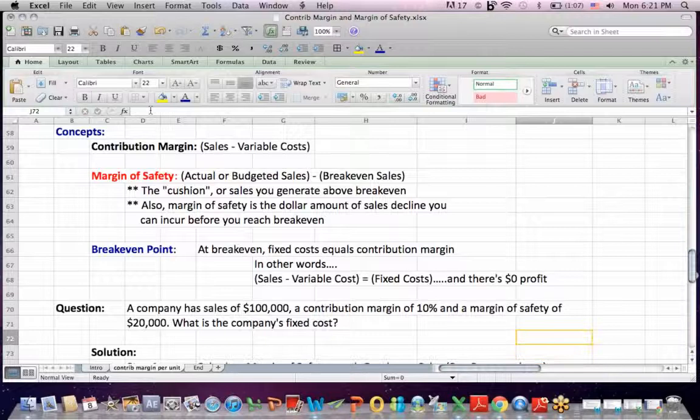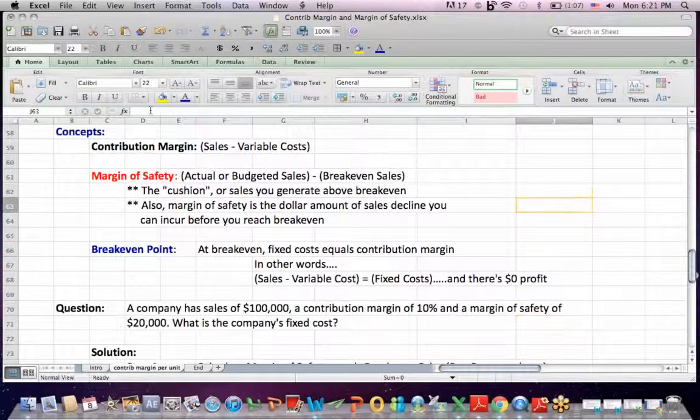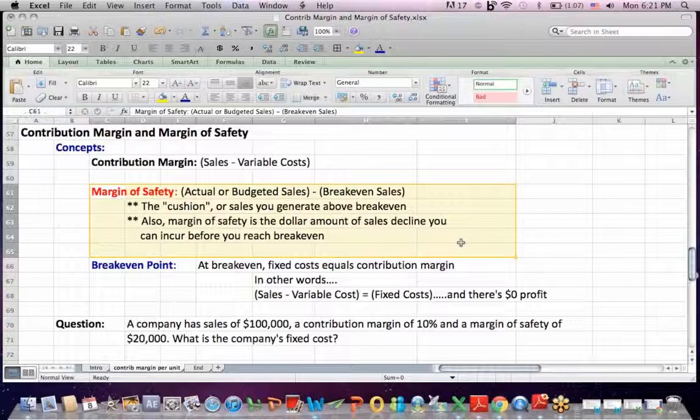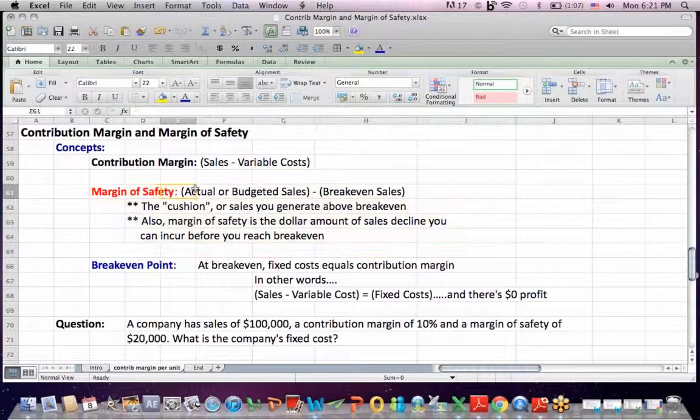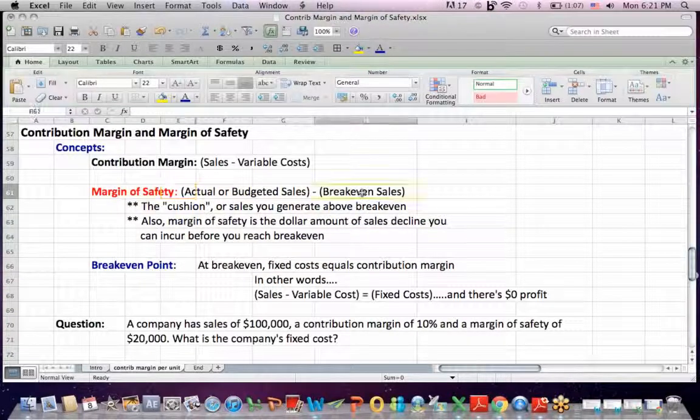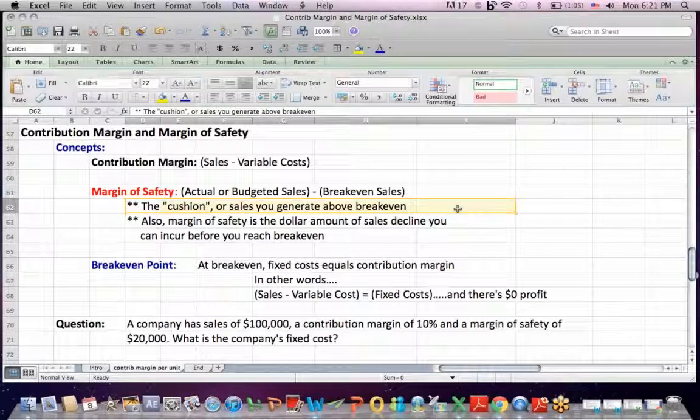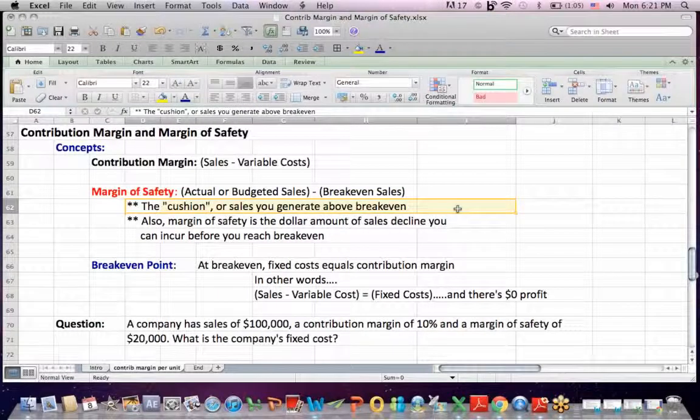The other topic I wanted to discuss here is margin of safety, which is a cushion. A good way to think about it is a cushion. Margin of safety is your actual or budgeted sales, depending on what you're looking at, less break even. It's the cushion or the sales that you generate above your break even.